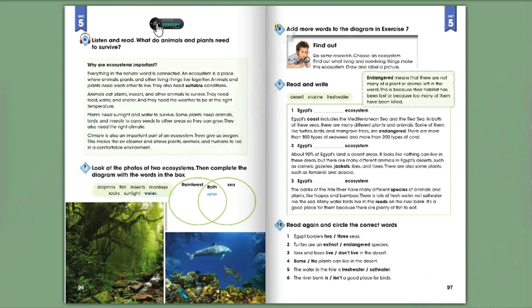Climate is also an important part of an ecosystem. Trees give us oxygen. This makes the air cleaner and allows plants, animals, and humans to live in a comfortable environment.